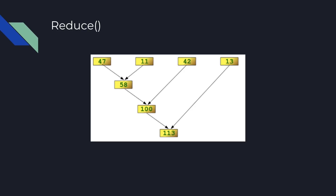Let's look at the following example. We have four elements in the array and reduce is called just three times total for this example. Let's imagine the purpose of the reduce method is to calculate the sum of all elements. On the first execution of reduce, which accepts two arguments 47 and 11, it calculates the sum and returns 58.